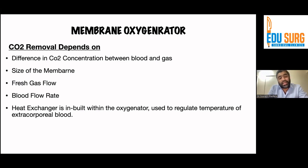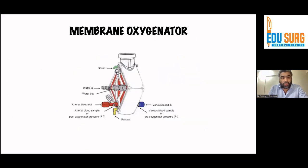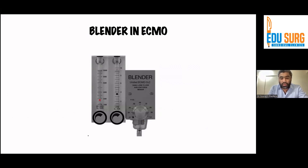The heat exchanger is inbuilt within the oxygenator and is used to regulate the temperature of the extracorporeal blood — we can warm or cool the patient accordingly, which is particularly relevant for patients on eCPR. You can see different types of membrane oxygenators from different ECMO machines — this is how a Cardio Help membrane oxygenator looks like. This is the heat exchanger in an ECMO circuit. This is the blender, which can give us FiO2 from room air at 21% up to 100%, and sweep gas flow can be achieved.